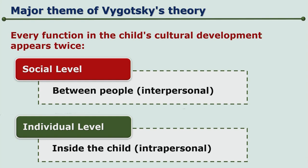In fact, everything we do and learn happens first at the social level. We observe people, we imitate them, we see what is happening around, and then try to do it all by ourselves. In this way, Vygotsky has rightly explained that the child's cultural development appears twice — first at the interpersonal level, then at the intrapersonal level.